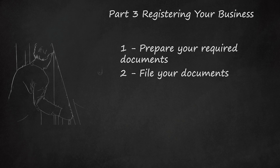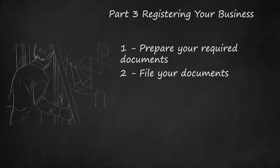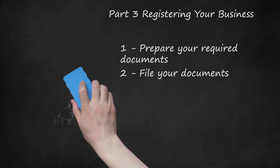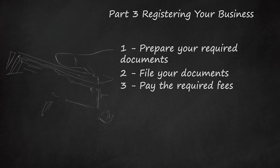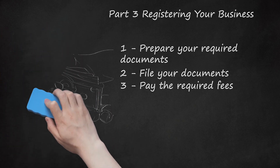File Your Documents. In California, you must either mail in your required forms or drop them off with the Secretary of State in person. To mail your documents, send them along with the required fee to: Secretary of State, Business Entities, P.O. Box 944260, Sacramento, CA 94244-2600. To drop your forms off in person, take them to 1500 11th Street, 3rd Floor, Sacramento, CA 95814. Pay the Required Fees. Each type of filing requires you to pay a fee. If you are filing articles of incorporation, the fee is $100. If you are filing articles of organization, the fee is $70. If you are filing a statement of partnership authority, the fee is $70.